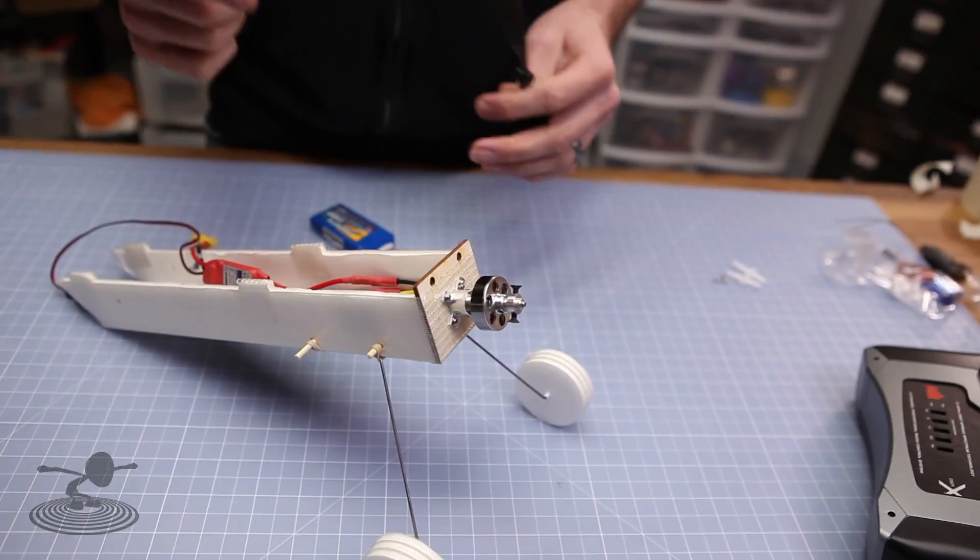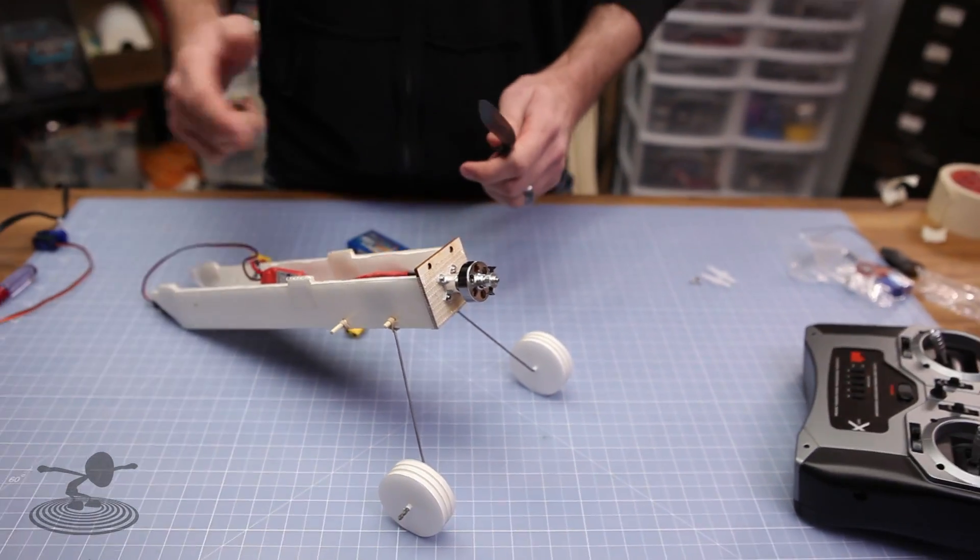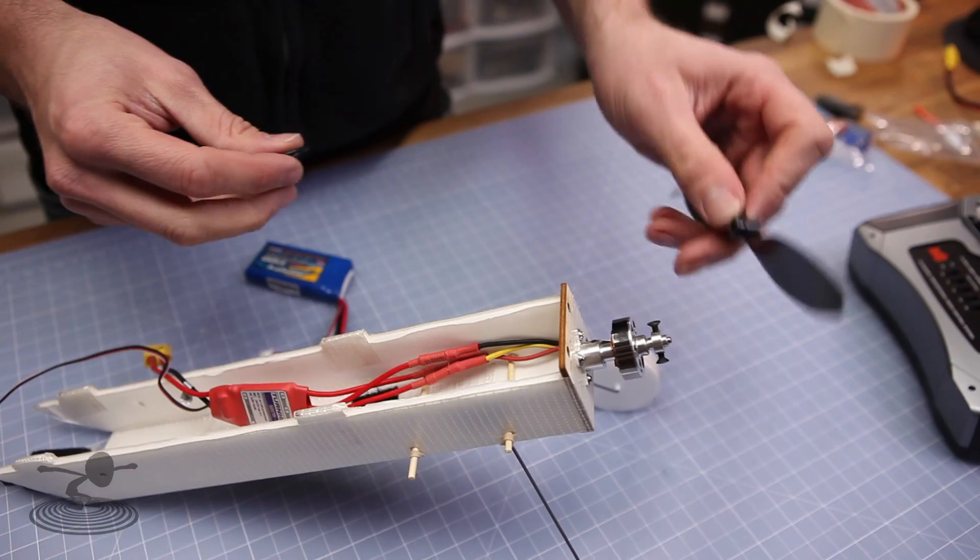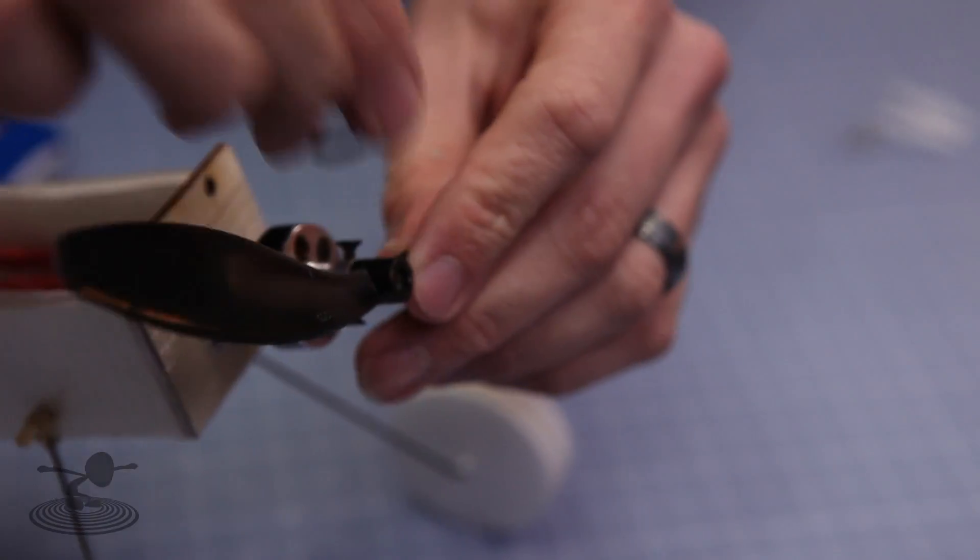We now have our servo centered, our ESC calibrated, and our transmitter bound to our receiver. The last step is to finally put this prop on to the business end of our pod.